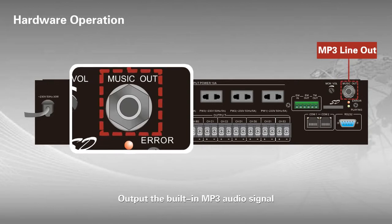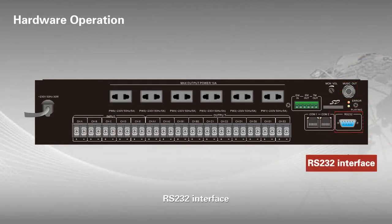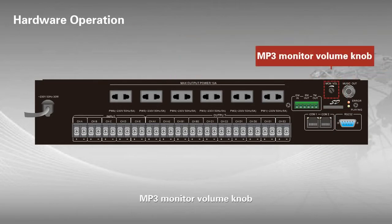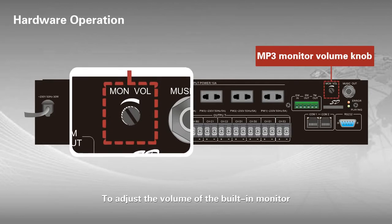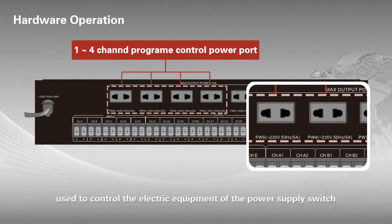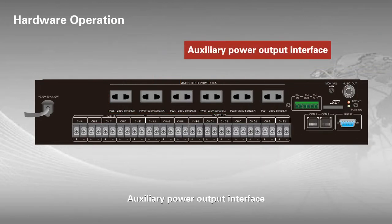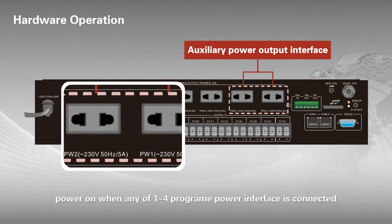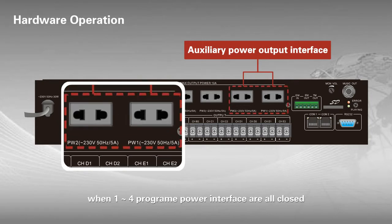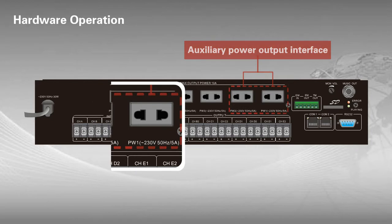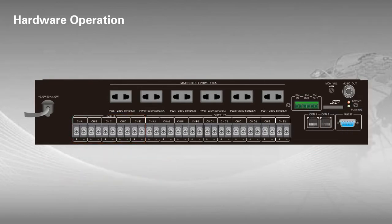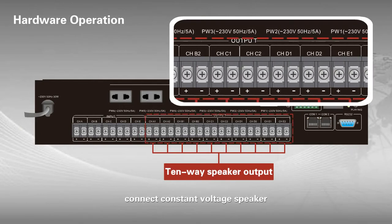MP3 line output: outputs the built-in MP3 audio signal. RS232 interface: connects to PC for computer control. MP3 monitor volume knob: adjusts the volume of the built-in monitor. 1-to-4-channel program control power port: controls electric equipment power supply switching. Auxiliary power output interface: powered on when any of the 1-to-4 program power interfaces are connected; turns off when all 4 are closed. 5-channel amplifier line input and 10-way speaker output for constant-voltage speaker connection.